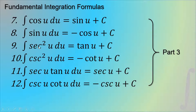The third formula is the integral of sec² u du, which is equal to tan u plus C. The integral of csc² u du is equal to negative cot u plus C. The integral of sec u times tan u du is equal to sec u plus C. And the integral of csc u times cot u du is equal to negative csc u plus C.